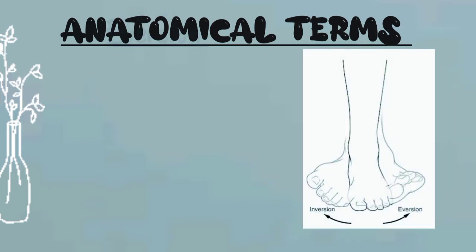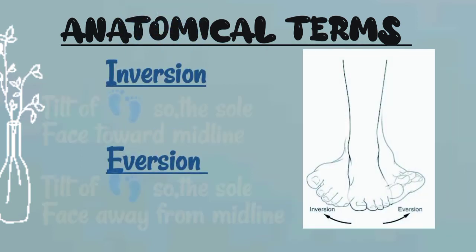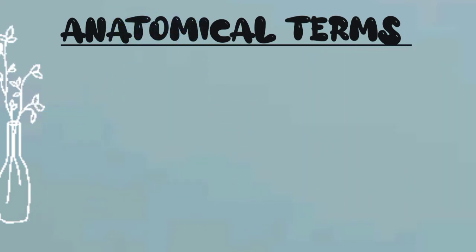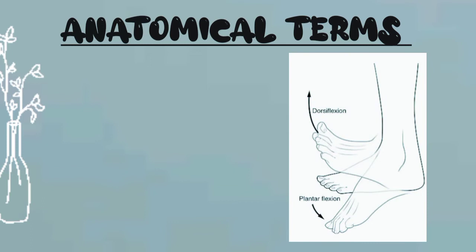The next terms are inversion and eversion. These are special terms used to describe certain movements of the foot. Inversion is turning the sole of the foot so that it faces in the medial direction, toward the midline. Eversion is the opposite movement, so that the sole faces in the lateral direction, away from the midline of the body.